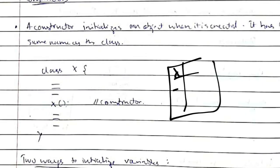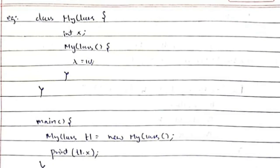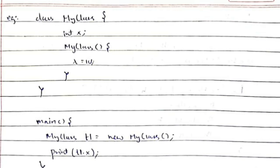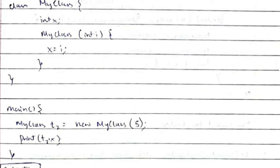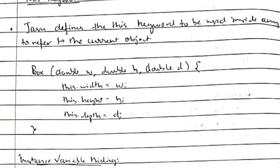Suppose I have an object with variables x, y, and z. I want x initialized to 1, y to 2, and z to 3 automatically when the object is created. For this I use a constructor. There are two types: a default constructor, which always sets x to a fixed value like 10, and a parameterized constructor, where the user passes a value while creating the object and that value is initialized to the variable.